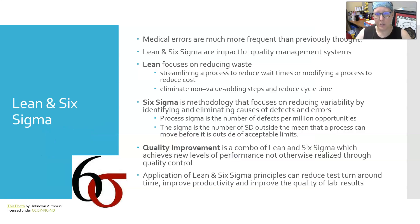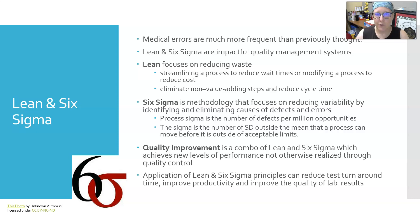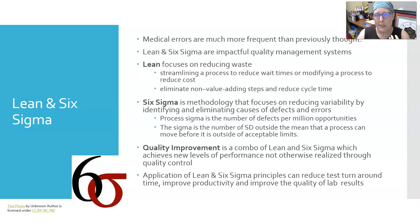Medical errors are much more frequent than previously thought. Lean and Six Sigma are two impactful quality management systems. Lean focuses on reducing waste, so streamlining a process to reduce wait times or modifying a process to reduce cost. It eliminates non-value adding steps and it reduces cycle time.